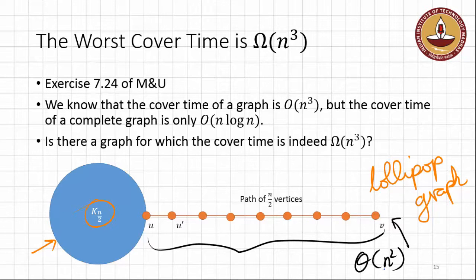Now, why does the whole graph, for example, if you start at V, in Θ(N²) time it will reach U. And once it reaches U, we already have seen that the complete graph has a cover time of just O(N log N). So once it reaches U, the random walk will fall into this complete graph, and the entire graph will be covered in an extra O(N log N) time.